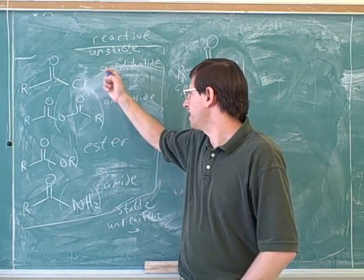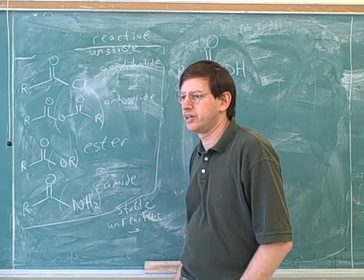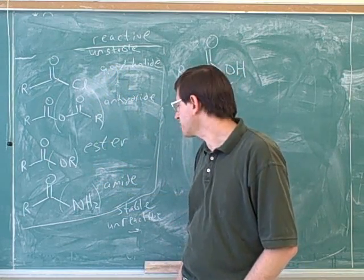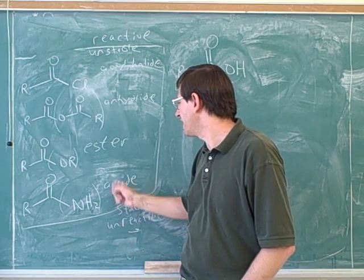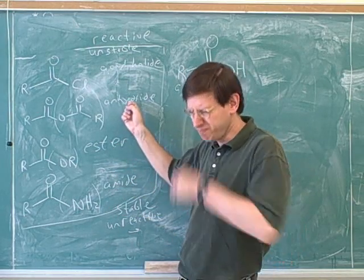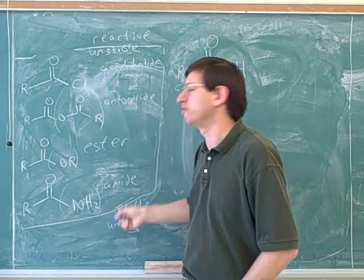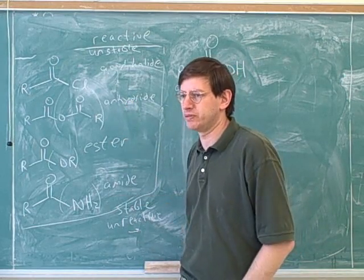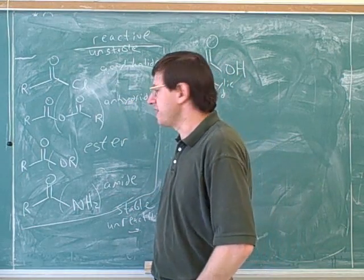So we can easily make an acyl halide into any of these other compounds. But actually, generally speaking, you cannot make an amide into an ester or anhydride, at least not in one simple step, because that would be moving up. Usually we don't move up the table. Now we need to explain why that is.